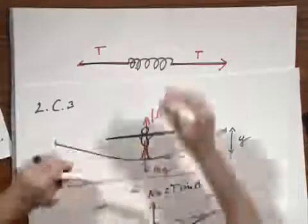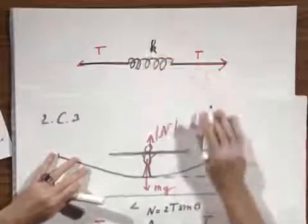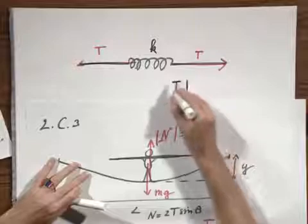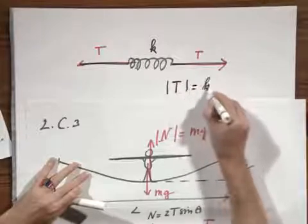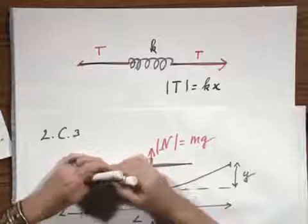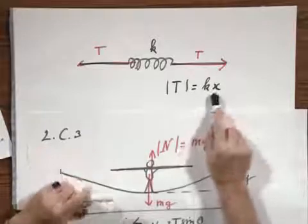And if this spring has a spring constant K, then the magnitude of T would be KX, if this spring were extended over a distance X.